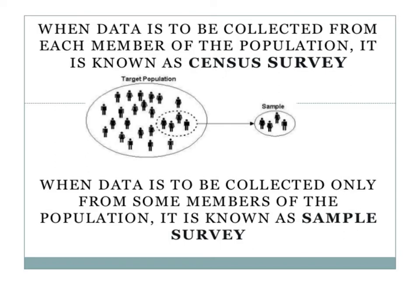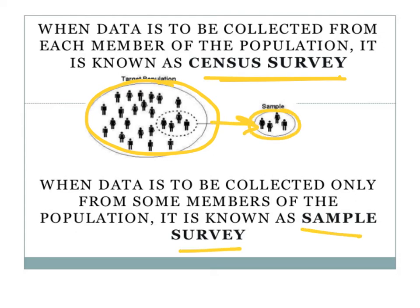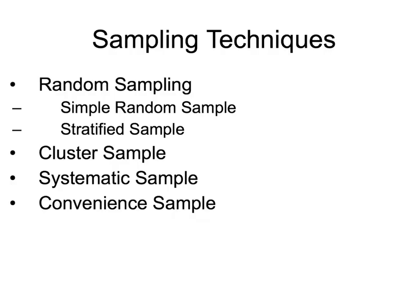When data is collected from each member of the population, it's known as a census survey — everybody is being asked. When data is collected from only some members, it's a sample survey. That distinction brings back some of the terminology we've already covered.